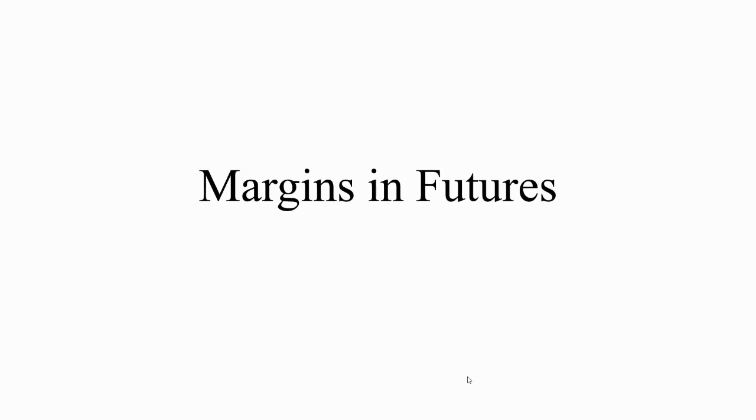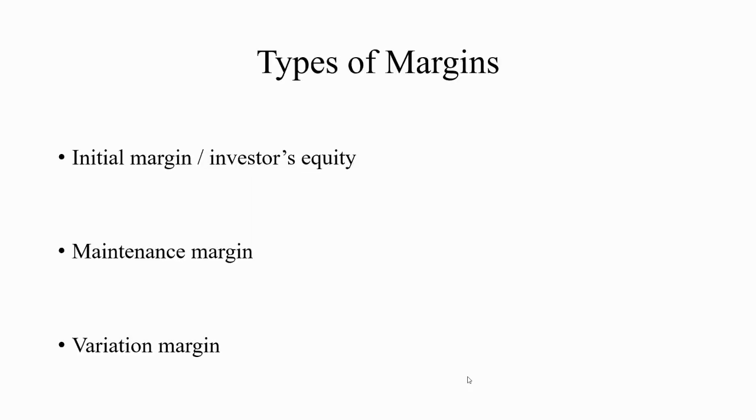Assalamu alaikum, hello everyone. This video lecture explains what margins are and what is their role in futures contracts. Simply speaking, margins are a kind of safety deposits which are demanded by brokers from the investors while buying or selling futures contracts, and are mostly in the form of cash. There are three types of margins: initial margin, maintenance margin, and variation margin.